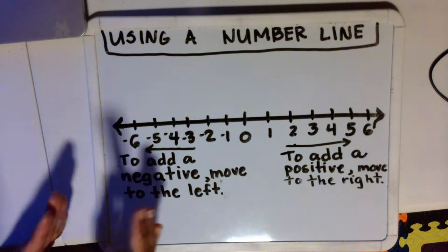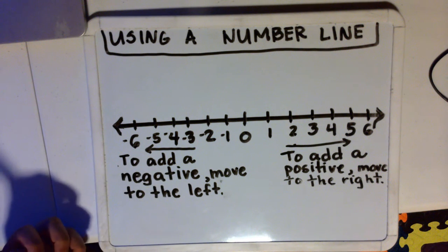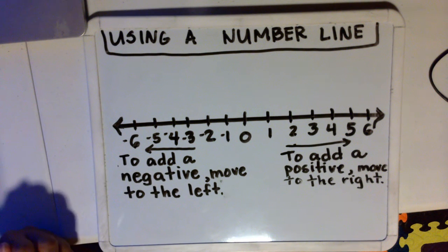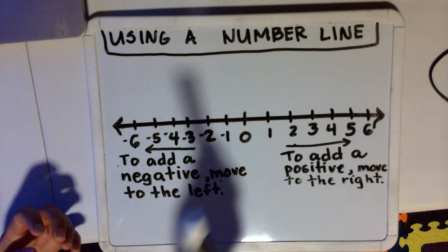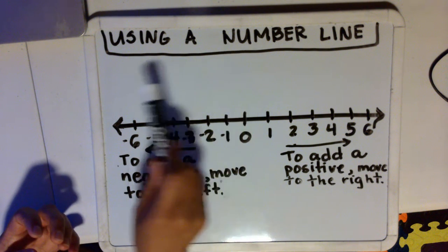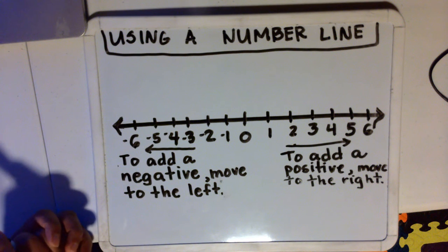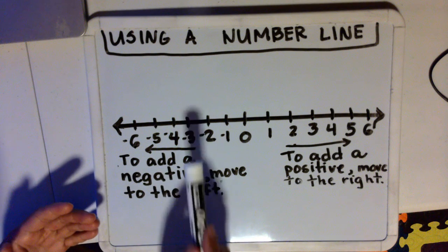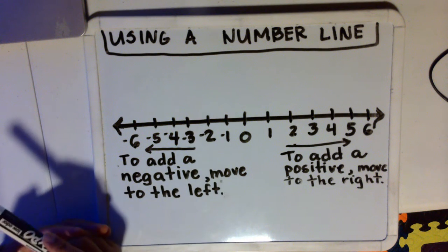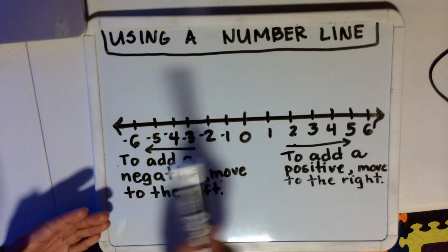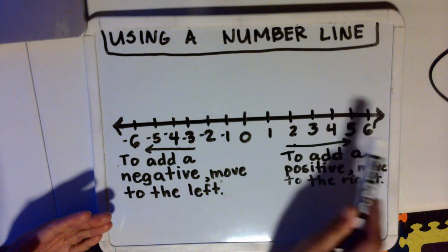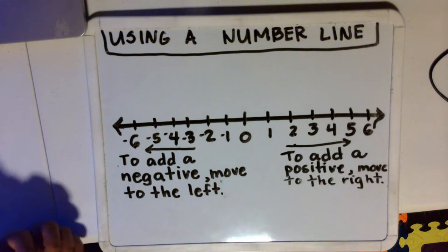Wherever you're at on the number line, to add a negative, you move to the left of the number line. To add a positive, you move to the right of the number line. So wherever you're at on the number line, to add a positive, you move to the right of the number line.